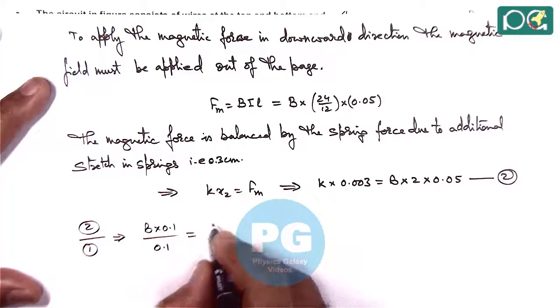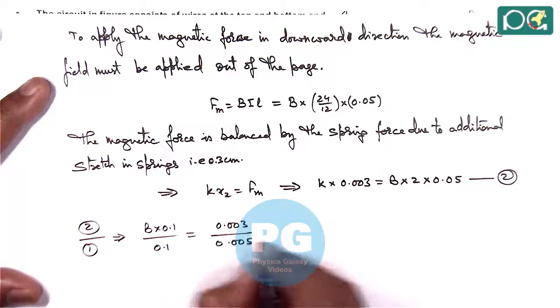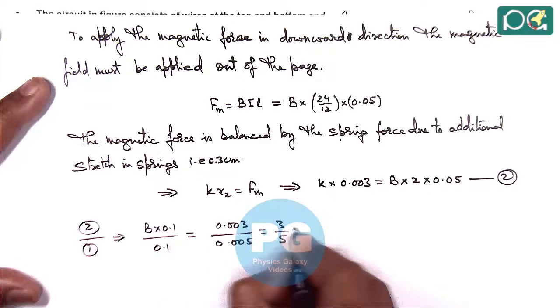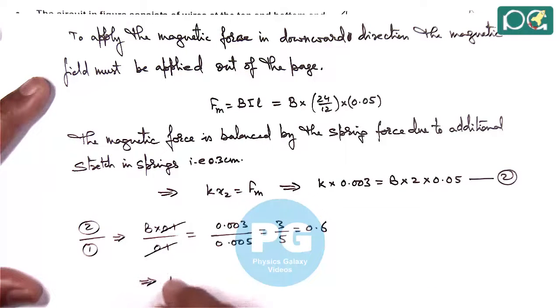Equation 2 divided by equation 1 implies B times 0.1 divided by 0.1 equals, k gets cancelled out, 0.003 divided by 0.005, which is 3 by 5 or 0.6.